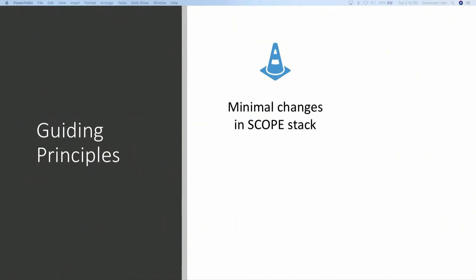The first decision was to make minimal changes in the existing Scope stack — in the compiler, optimizer, Scope engine (which is the physical operator implementations), the storage stack, and the tooling. One of the reasons we chose TESH was its amazing extensibility story and the APIs it provides. Because both TESH and the Job Manager have their foundations in Dryad, this was also a very good choice. We decided we will use the existing TESH extensibility story as far as possible.